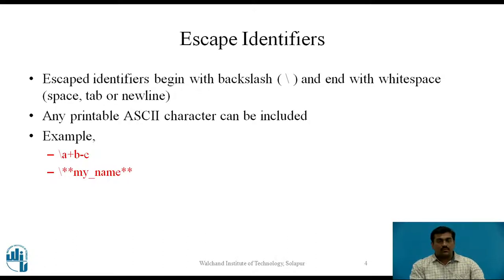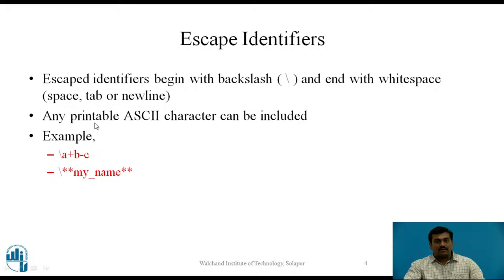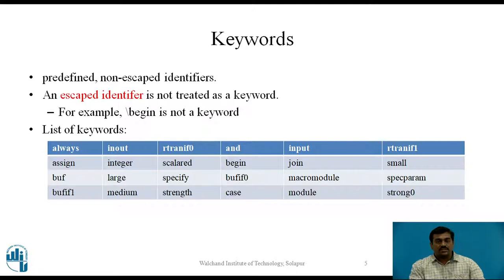Many times a programmer wants to give a name of their choice, and in that case they can use escape identifiers. Escape identifiers begin with the backslash and the name is considered until the first white space. Using an escape identifier, one can use any printable ASCII character as a name. For example, the escape identifier name \a+b-c starts with the backslash, so anything starting with a backslash is considered an escape identifier.